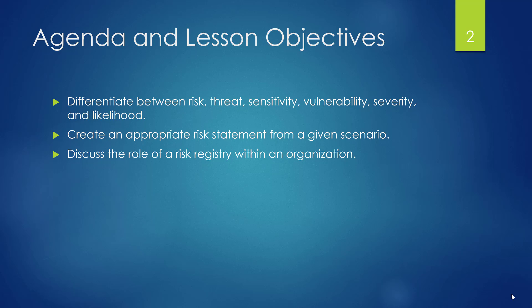We're then going to look at building a risk statement. We're going to use a Telnet example to really dig in hard and make sure you're comfortable with risk statements. From there we'll look at threats and the threat component associated with building a risk statement, including some of the threat registries that are out there. After that, we'll move into additional readings that explore risk analysis, expected loss, quantitative analysis, and how they tie back into risk statements and the formulation thereof.